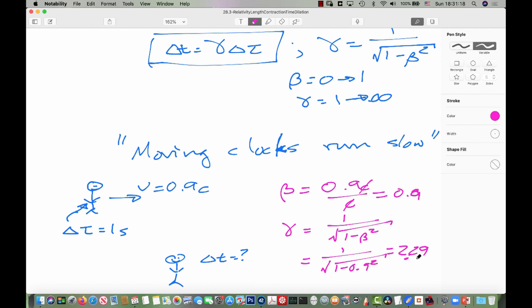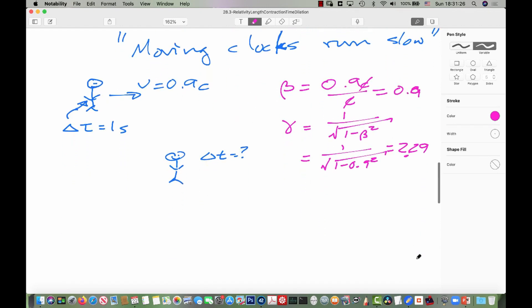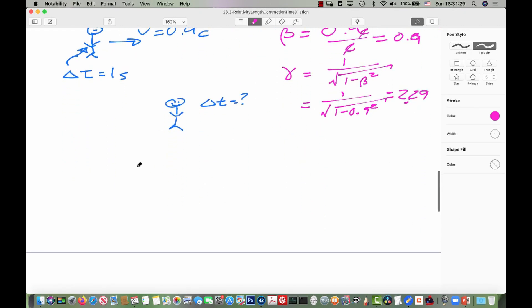So we figured out our beta, we figured out our gamma. And then, usually what we do is we use this moving clock to run slow thing to figure out whether we need to multiply or divide. Since you're seeing my clock moving, the answer is multiply. So, we can go ahead and say, we are solving for delta T. That's equal to gamma delta tau. So, 2.29 times 1 second is 2.29 seconds.